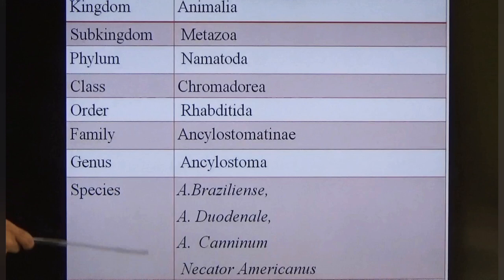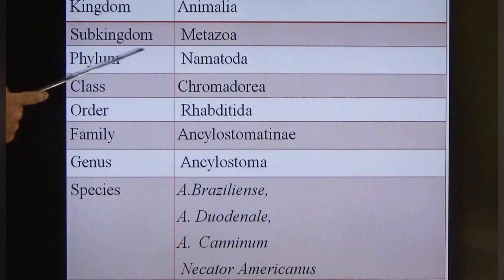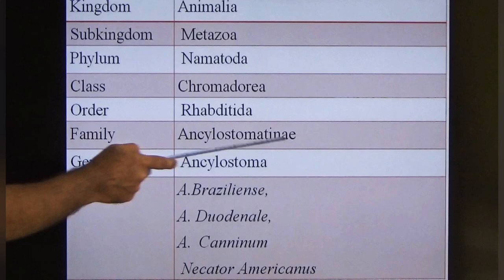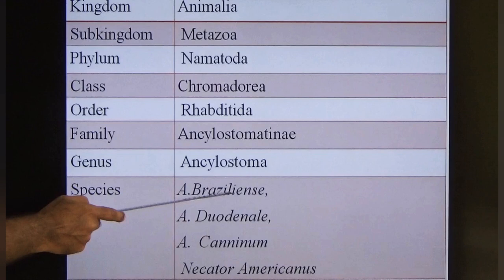In the introduction, kingdom is Animalia — all parasites come under Animalia. Sub-kingdom is Metazoa, that is helminths. Phylum is Nematoda. Class is Chromadorea. Order and family is Ancylostomatidae, genus is Ancylostoma. There are four species: Ancylostoma braziliense, Ancylostoma duodenale, Ancylostoma caninum, and Necator americanus.